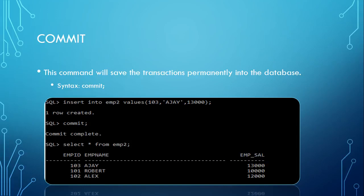In the example, you can see we insert into mp2 values with three field names — one row is created — then a COMMIT is given. When we retrieve back this data, you can see all the records are returned correctly.